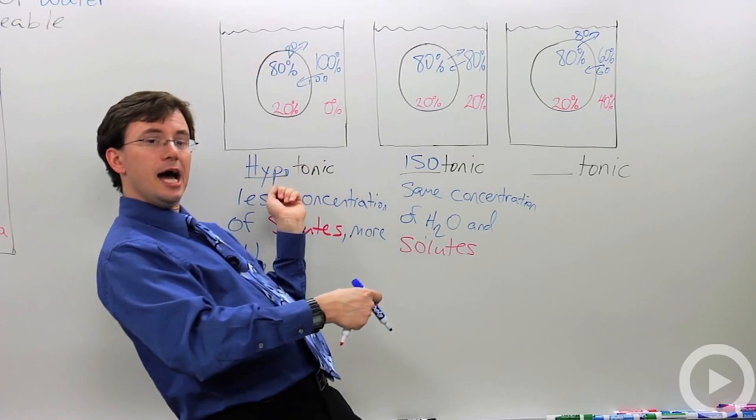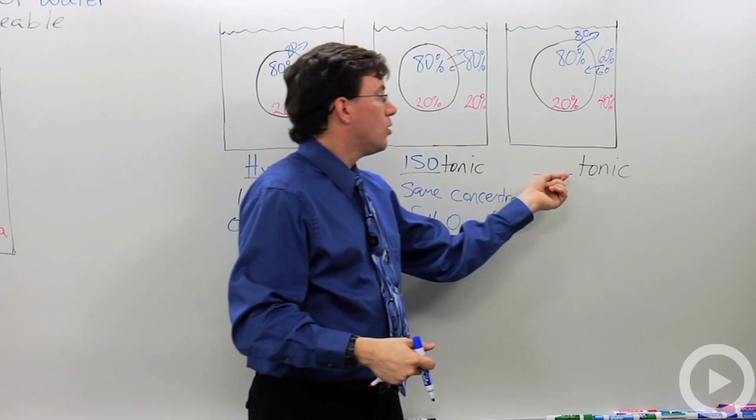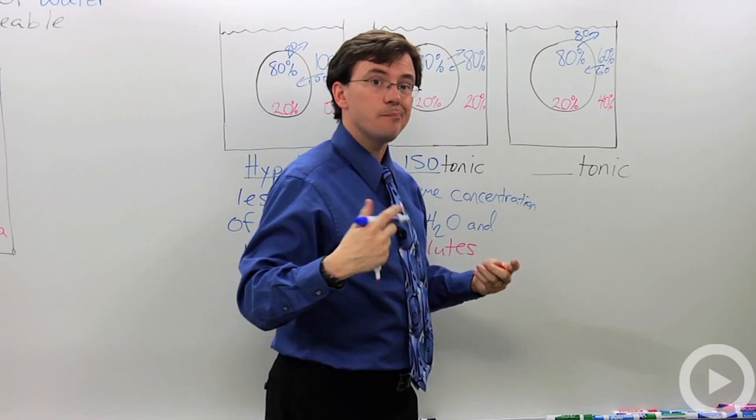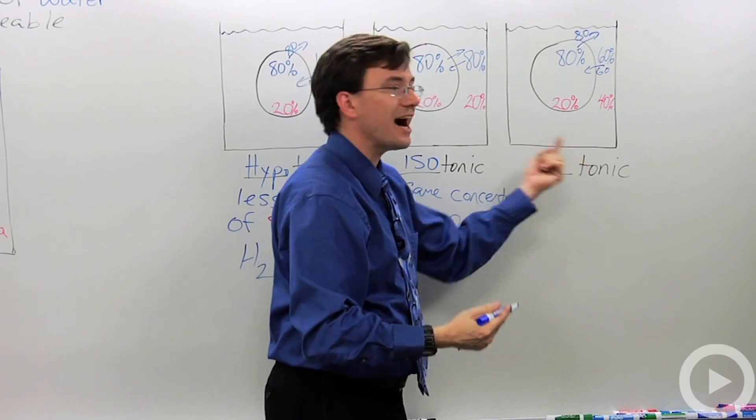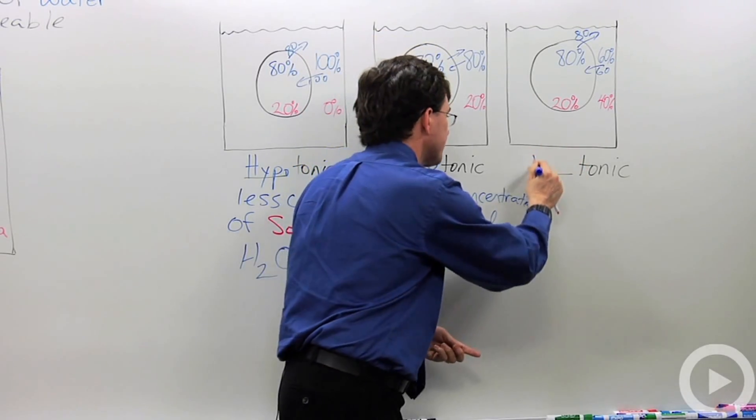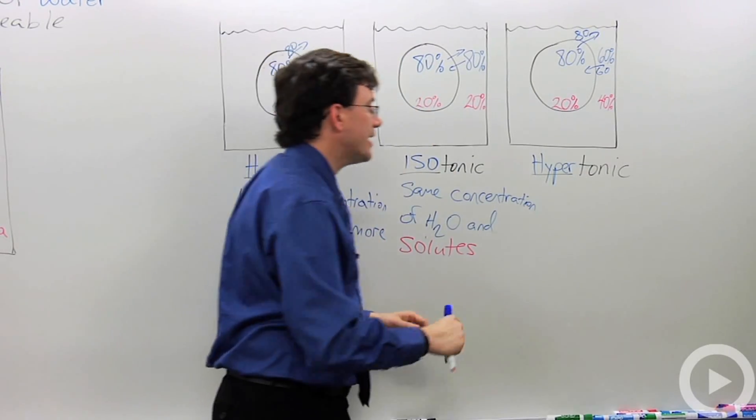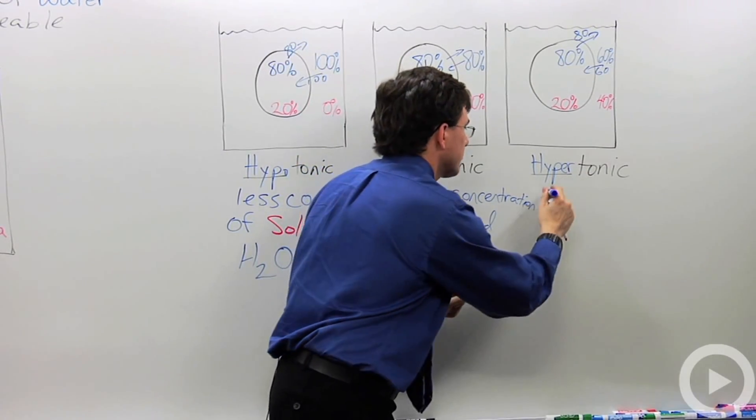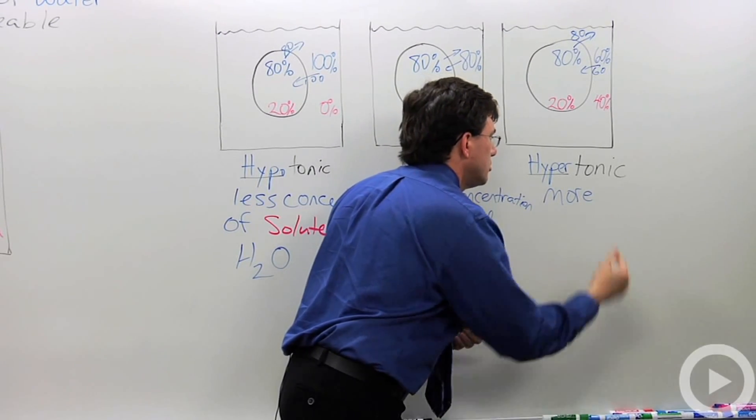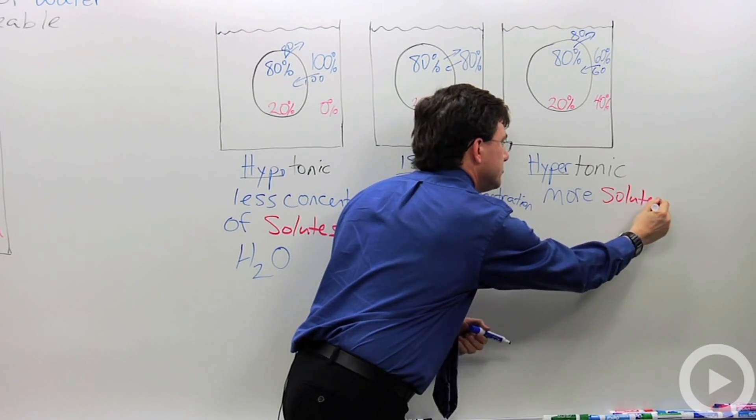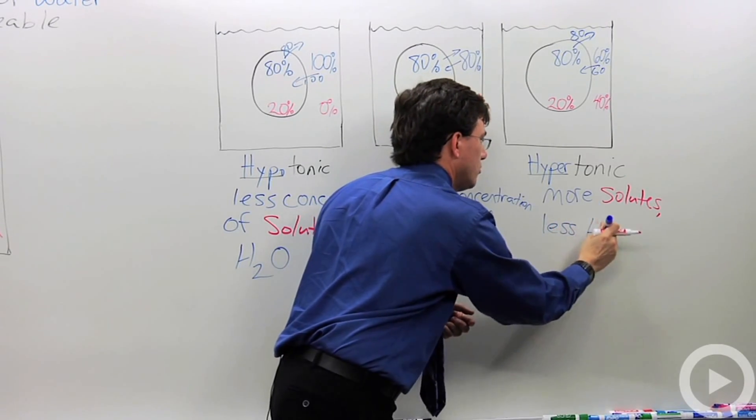Well, you may have known that hypo meant below, as in hypothermia. What means excessive? Hyper, like your brother. He is hyperactive, so this has a hyper excessive pull. So a hypertonic solution has more solute, less water.